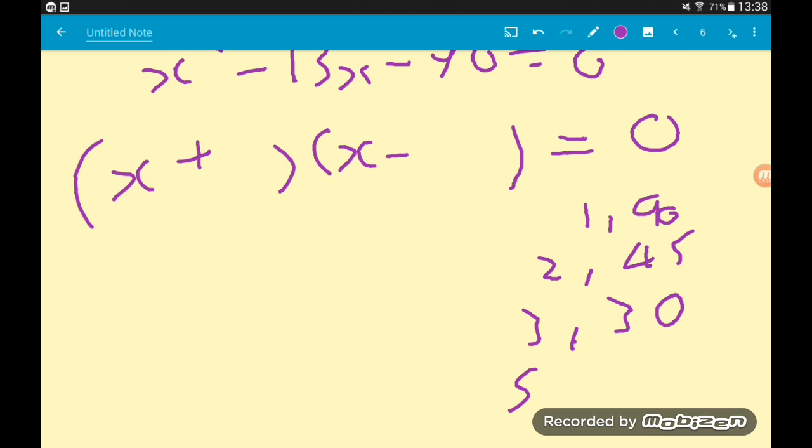5 does, 18 times. Aha! 5 and 18 have a difference of 13. Now given that we want minus 13, the bigger of the two numbers is our negative number. So we're going to have (x plus 5) times (x minus 18).